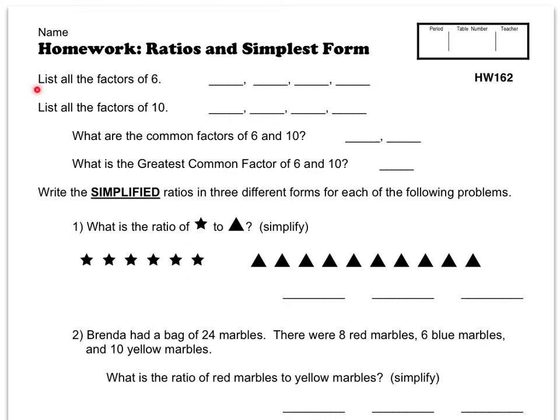This first one tells you to list all the factors of 6—all the numbers that multiply to make 6. Here you're listing the factors of 10, all the numbers that you can multiply together that make 10. What are the common factors between 6 and 10? Look for any numbers that repeat and list those. Then what is the greatest common factor of 6 and 10? Pick the one that's the largest value.